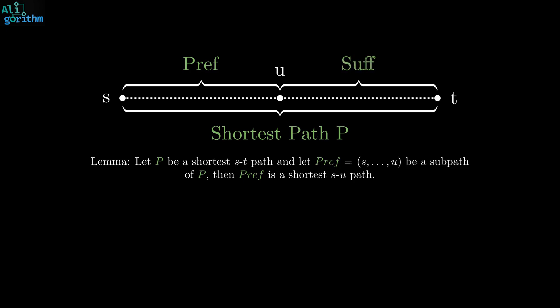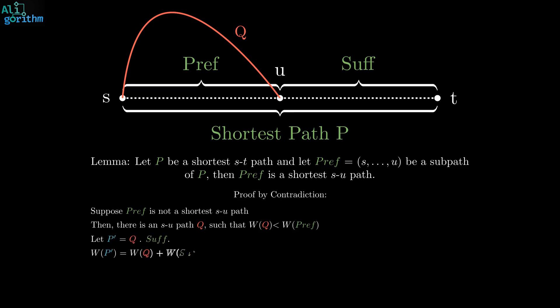Suppose the prefix pref is not a shortest SU path. This means that there is another path, Q, from S to U, that's shorter than pref. Consequently, the path P', which is the concatenation of Q with a suffix path, is shorter than P, implying P is not a shortest path. This is a contradiction. Hence, pref is a shortest SU path.